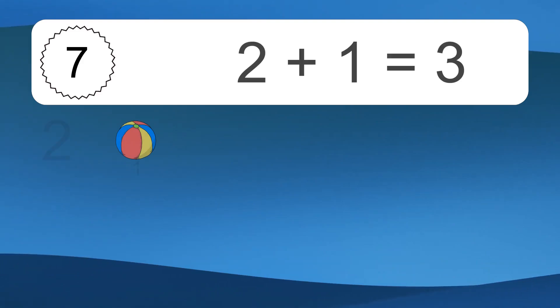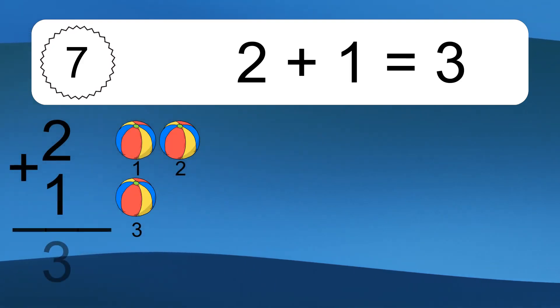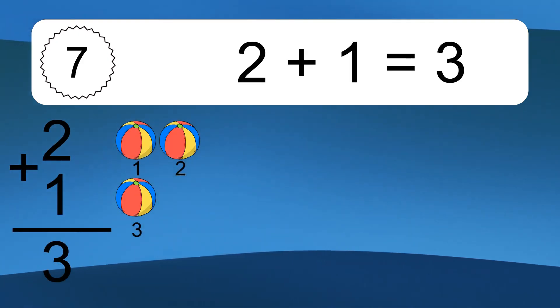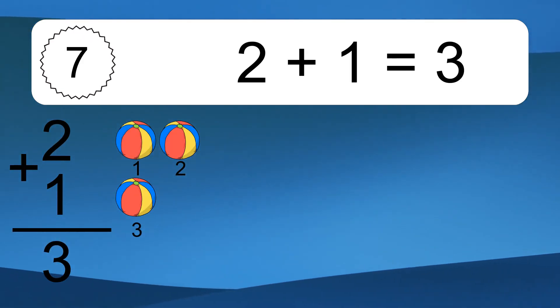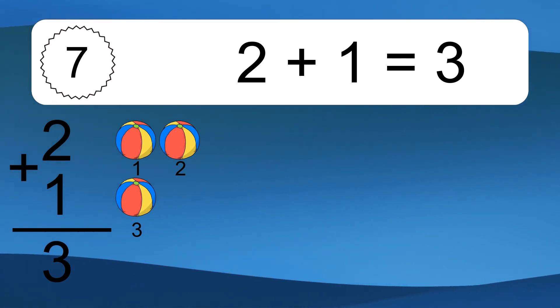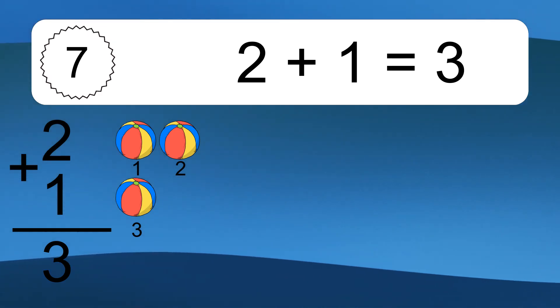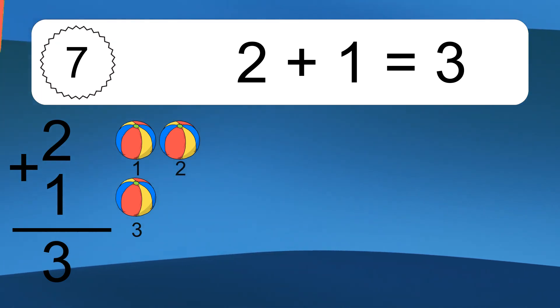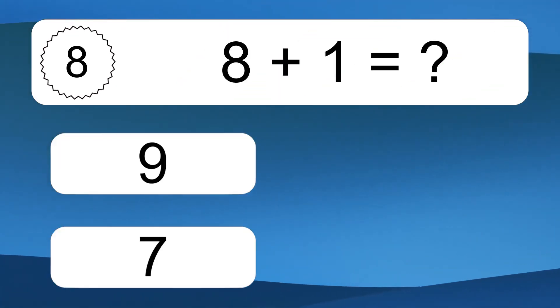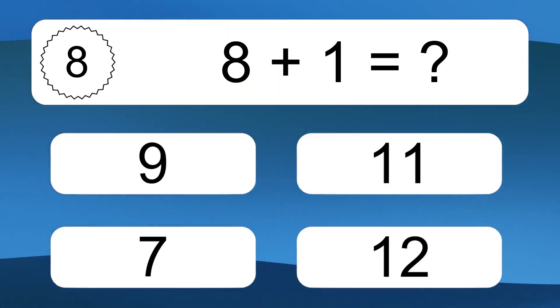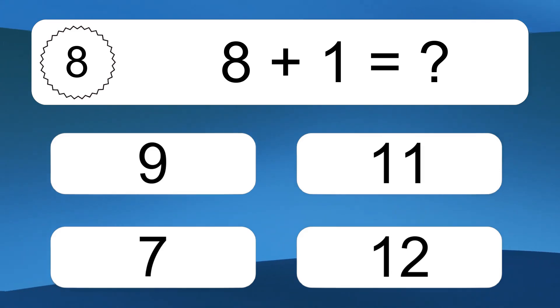2 plus 1 equals 3. Let's count it: 1, 2, 3, 4, 5, 6, 7.